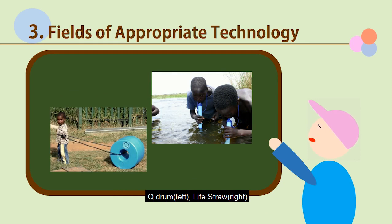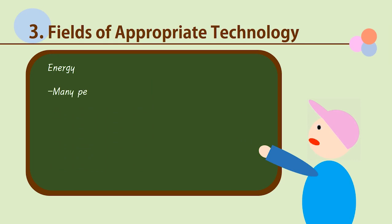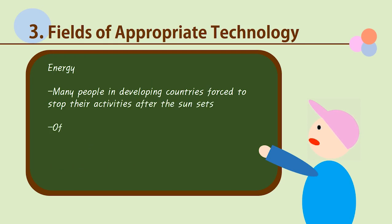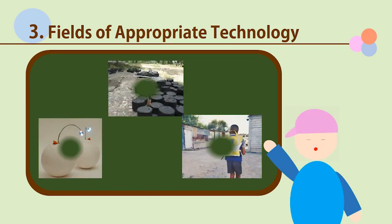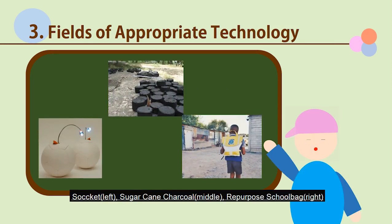The next field is energy. Many people in developing countries are forced to stop their activities after the sun sets. Even in cases where they have energy, they often use fuel that produces gases which are harmful for health. Therefore, appropriate technology is important in the field of energy as well. The first picture is of a socket, a soccer ball that produces energy when kicked. At night, it provides light for children to study by, just like the repurposed school bag in the third picture. This school bag is made from recycled plastic bags and collects solar energy during the day. The sugarcane charcoal in the second picture is made from compressed sugarcane and does not produce noxious gases when used.